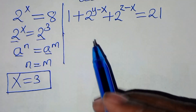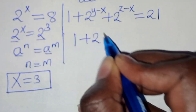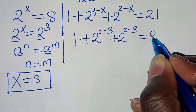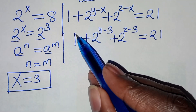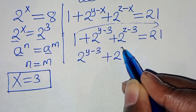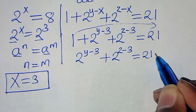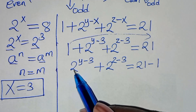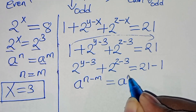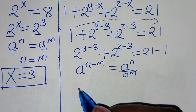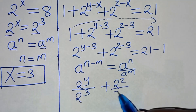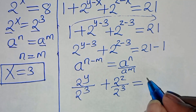Substituting x equals 3, we have 1 plus 2 to the power of y minus 3 plus 2 to the power of z minus 3 equals 21. Moving the 1 to the right-hand side: 2 to the power of y minus 3 plus 2 to the power of z minus 3 equals 20. Applying the index rule, this becomes 2^y over 2^3 plus 2^z over 2^3, which equals 20.